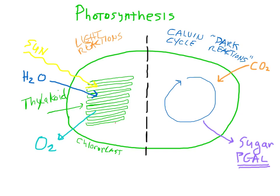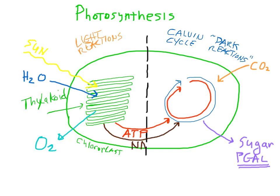These two models are tied together by the production of ATP in the light reaction. The ATP is what enables the Calvin cycle to perform its function. There is a second energy carrying molecule produced in the light reaction called NADPH. It also enables the Calvin cycle to get its work done.